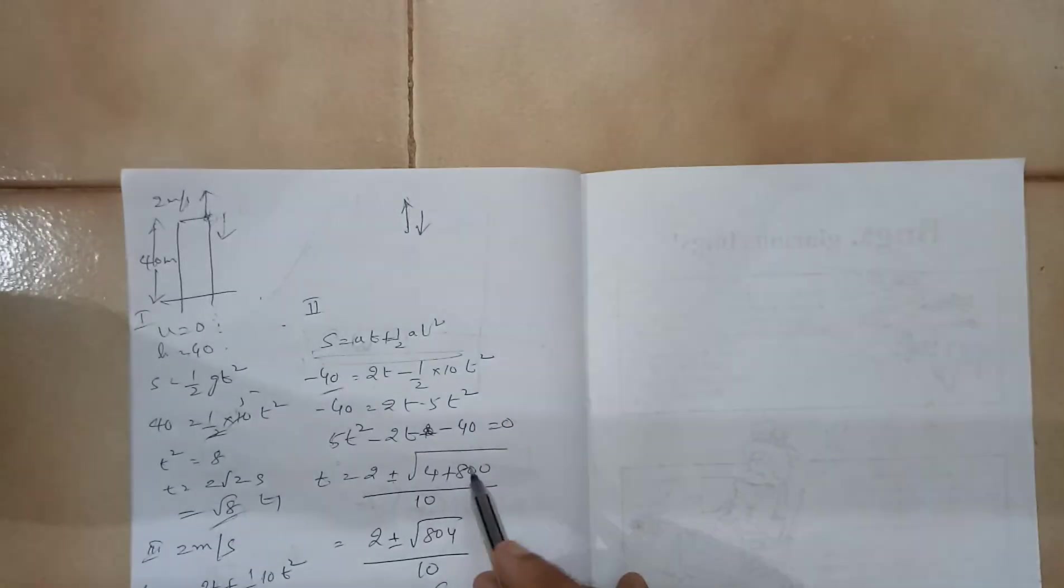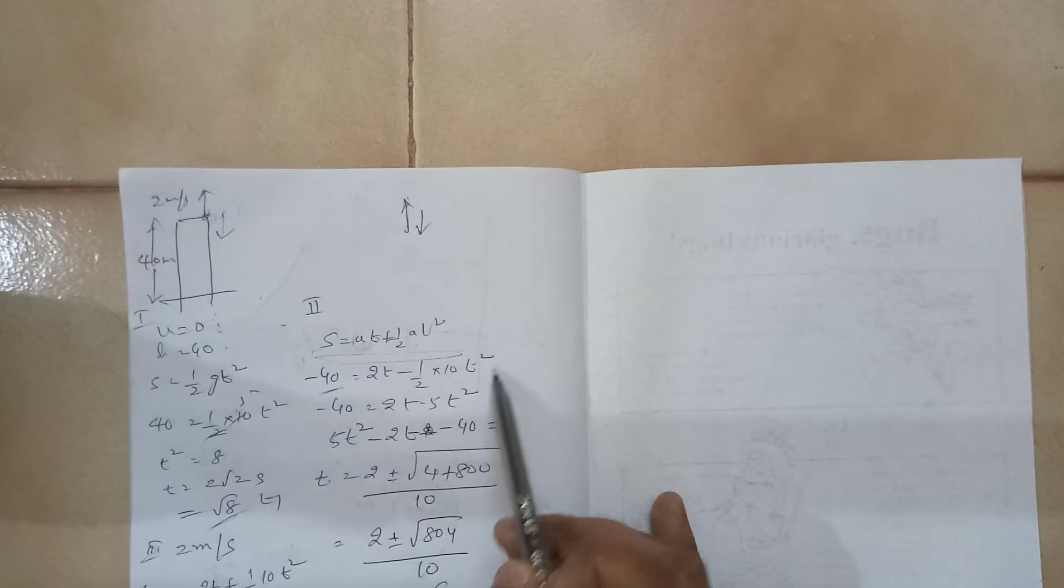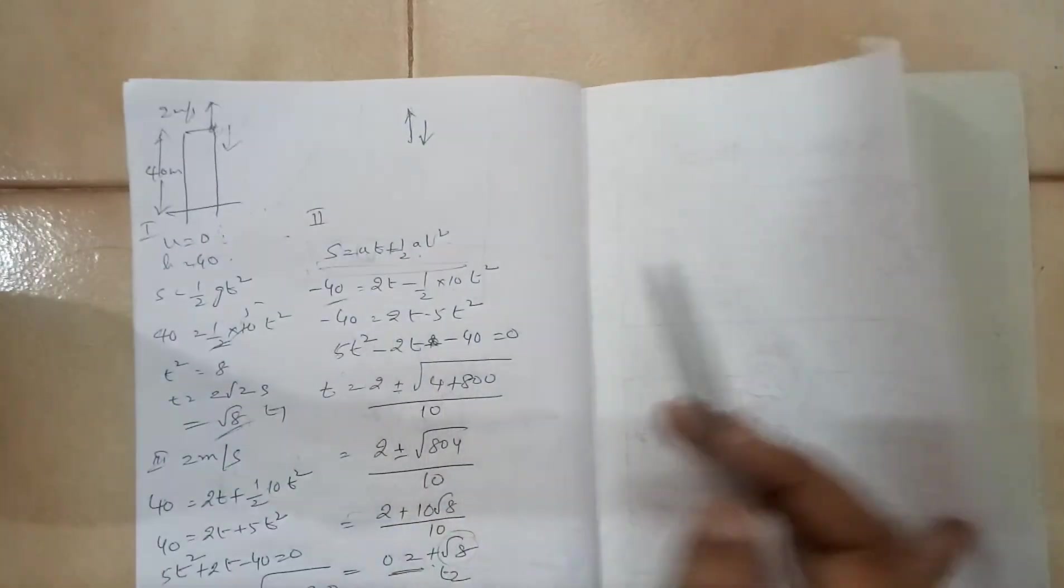So it will be positive 2 meter per second into t. And when the object is thrown up, the gravity is acting downward. So acceleration will be minus g. So it will be minus 10 t squared.